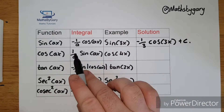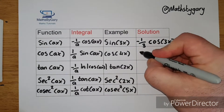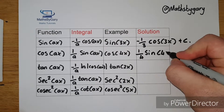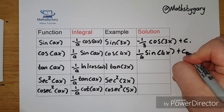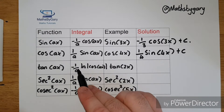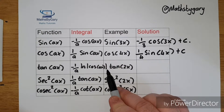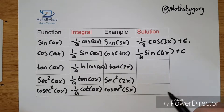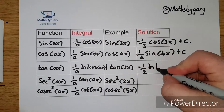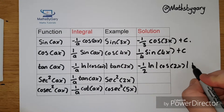The integral of cos(ax) becomes 1 over a times sin(ax). So cos(4x) becomes 1 over 4 times sin(4x) plus the constant. And the integral of tan(ax) becomes minus 1 over a times ln|cos(ax)|. So tan(2x) becomes minus 1 over 2 times ln|cos(2x)| plus c.